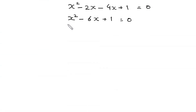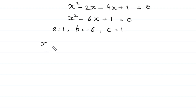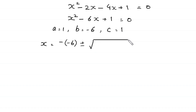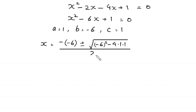This is a quadratic equation where a equals 1, b equals negative 6, and c equals 1. According to the quadratic formula, x equals negative b, which is negative of negative 6, plus or minus square root of b² minus 4ac, divided by 2a.